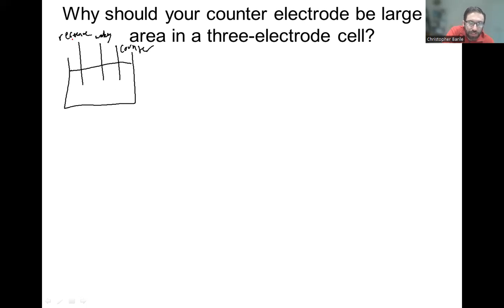We are applying on the potentiostat the voltage between the reference and the working. So if we want to do a reduction reaction, that's going to be something relatively negative, negative voltage. And so the counter reaction, what the potentiostat is doing is then applying its own voltage versus the counter electrode to be something positive so that we can get the opposite reaction occurring on the counter electrode to compensate.